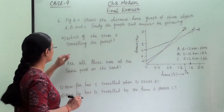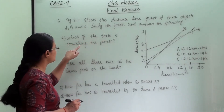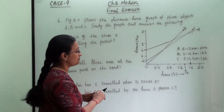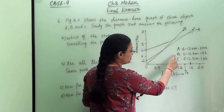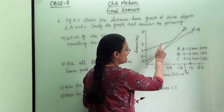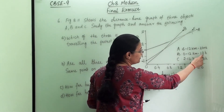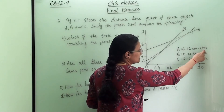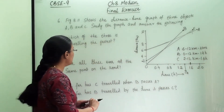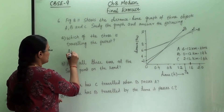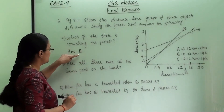The first question asks which of the three is travelling the fastest. Object B starts from 0 and reaches the end point in only 1.4 hours, which is less time than both A and C. So object B is travelling the fastest.